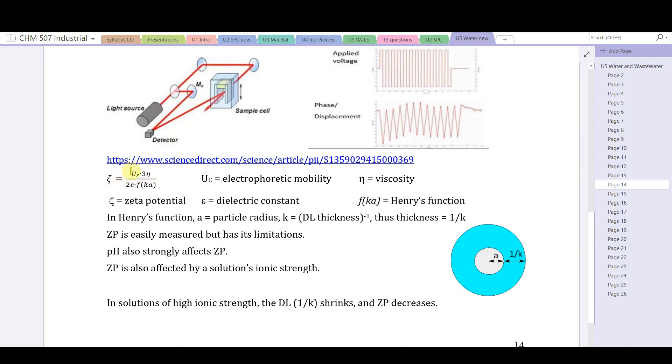In this system, zeta potential is proportional to the product of the mobility of the particle and the viscosity of fluid. Zeta potential is inversely related to the particle radius (a) and also to the thickness layer. Particles with a larger particle radius and a larger double thickness layer would have decreased mobility. Zeta potential is easy to measure but it has limitations. It's affected strongly by pH. It's also affected by a solution's ionic strength. If a solution has high ionic strength, the double layer shrinks. If it shrinks, the zeta potential decreases as well.